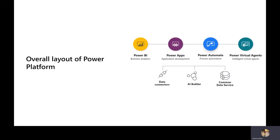Common Data Service is about where you want your data to be stored. When you're building a low-code development platform, you need databases to store all that data — it could be a spreadsheet, SharePoint, OneDrive, and so on. Common Data Service is totally dependent on that storage requirement.